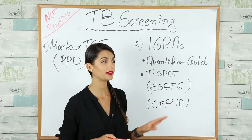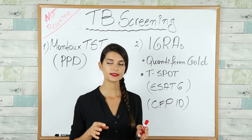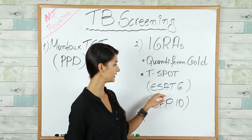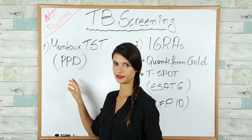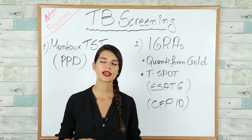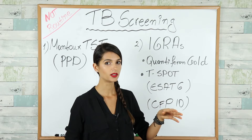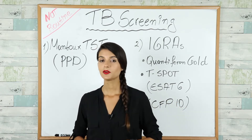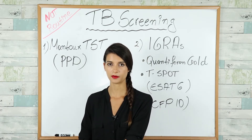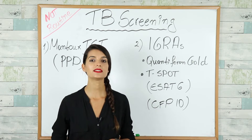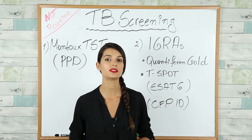In the IGRA tests, we take blood from the patient and mix it with specific isolated tuberculosis antigens called ESAT-6 and CFP-10, whereas the skin test uses PPD. We are looking for the same Type 4 hypersensitivity reaction, but this reaction happens in vitro since the blood is taken outside the patient. We measure the release of interferon gamma from the patient's T cells that have already been in contact with TB.